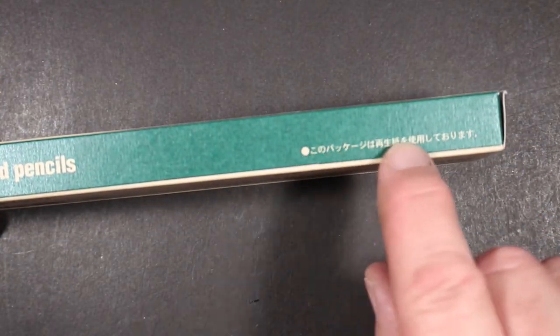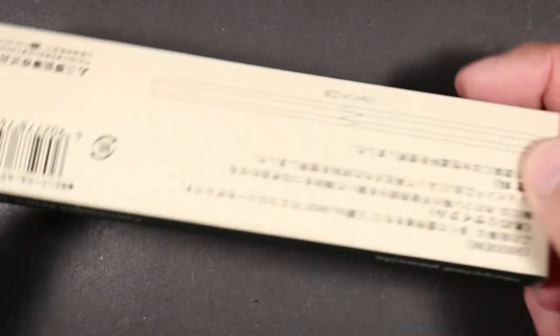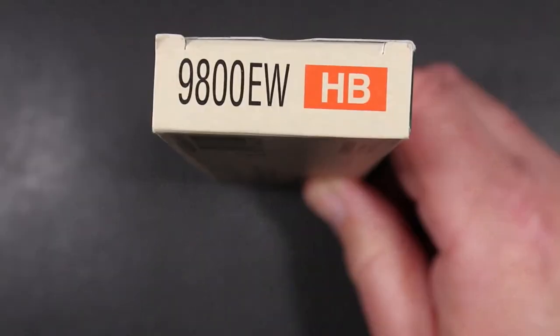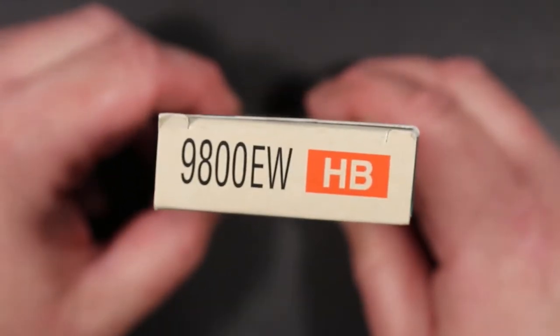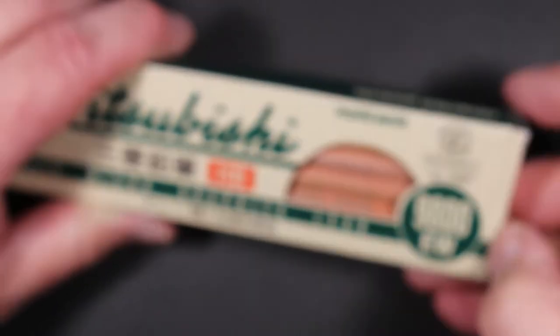And I'm not sure, I'm going to guess that says the Mitsubishi pencil company limited as it did on the reverse side. Here is the bottom of the box or the one side flap, 9800 EW HB, same thing on that side. So there's the box that it comes in. Now if I can open it, let's take out a pencil and take a closer look.